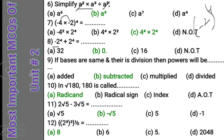Question 9: If the bases are the same and there is division, the powers will be subtracted. For example, a power 5 divided by a power 2 — write the base a once and subtract the powers: 5 minus 2 gives a power 3. So if bases are same and there is division, powers will be subtracted. Option B is the correct answer.